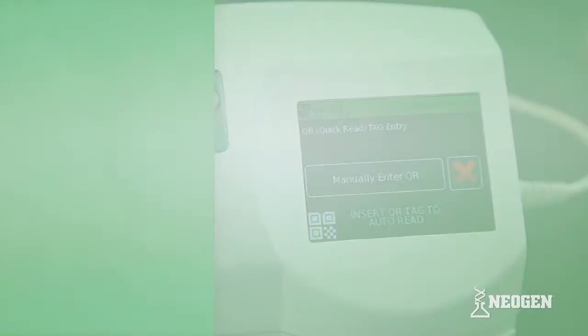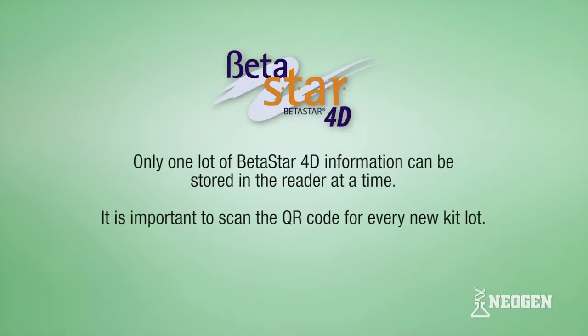Please note: only one lot of Betastar 4D information can be stored in the reader at a time. It is important to scan the QR code for every new kit lot.